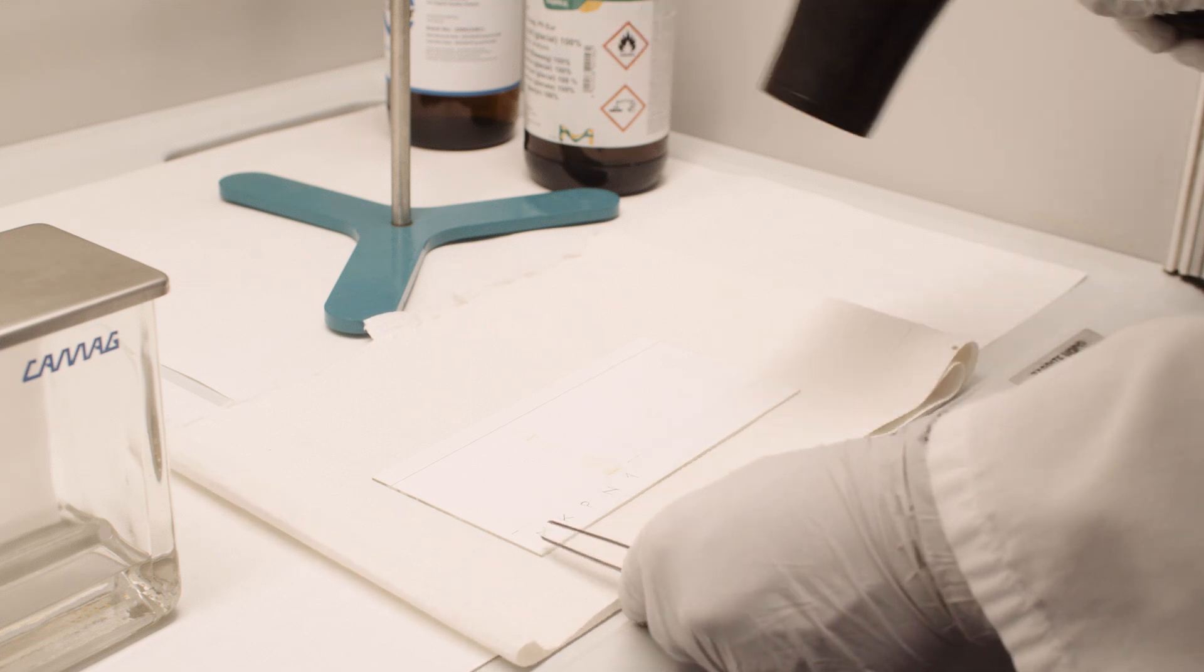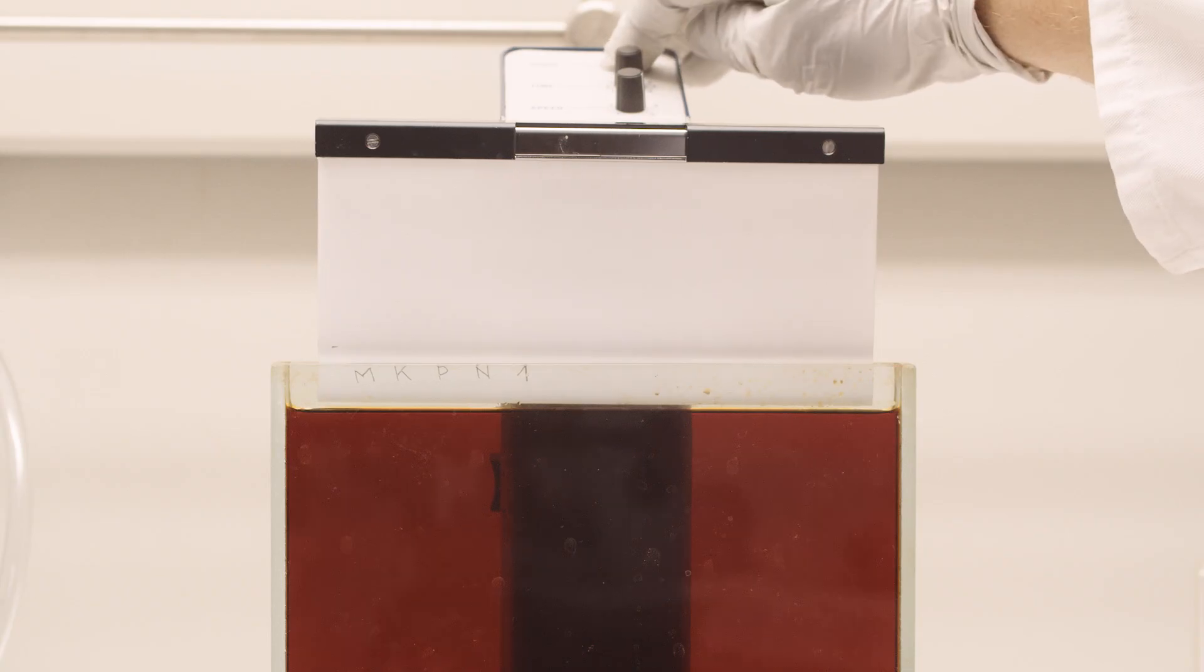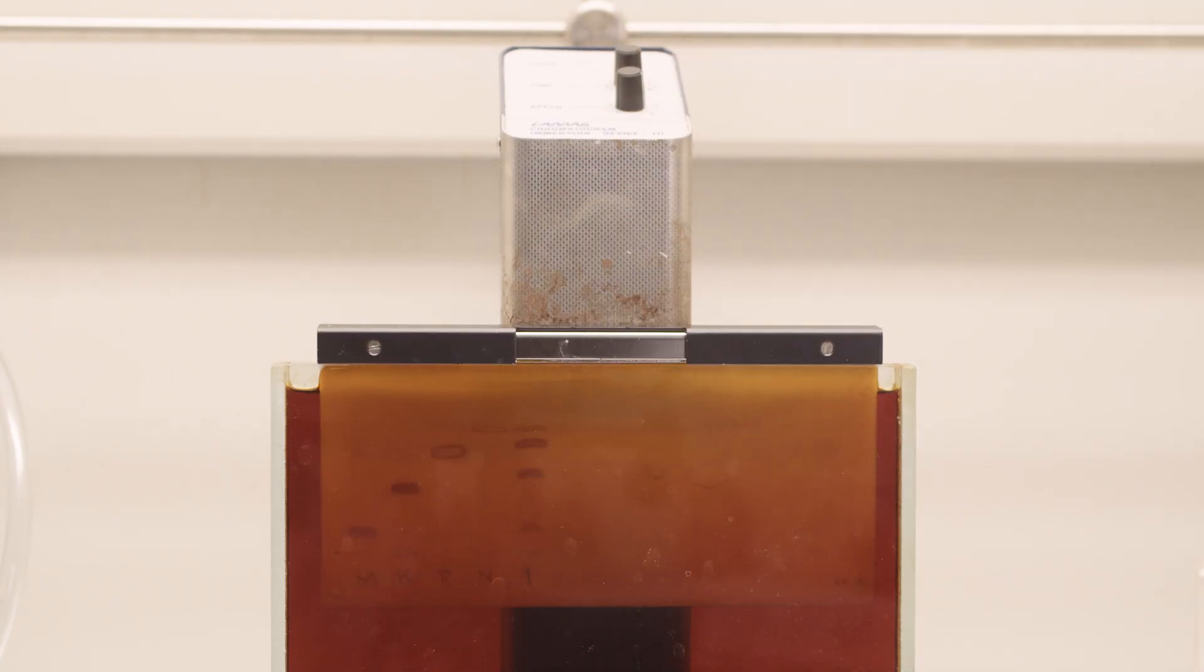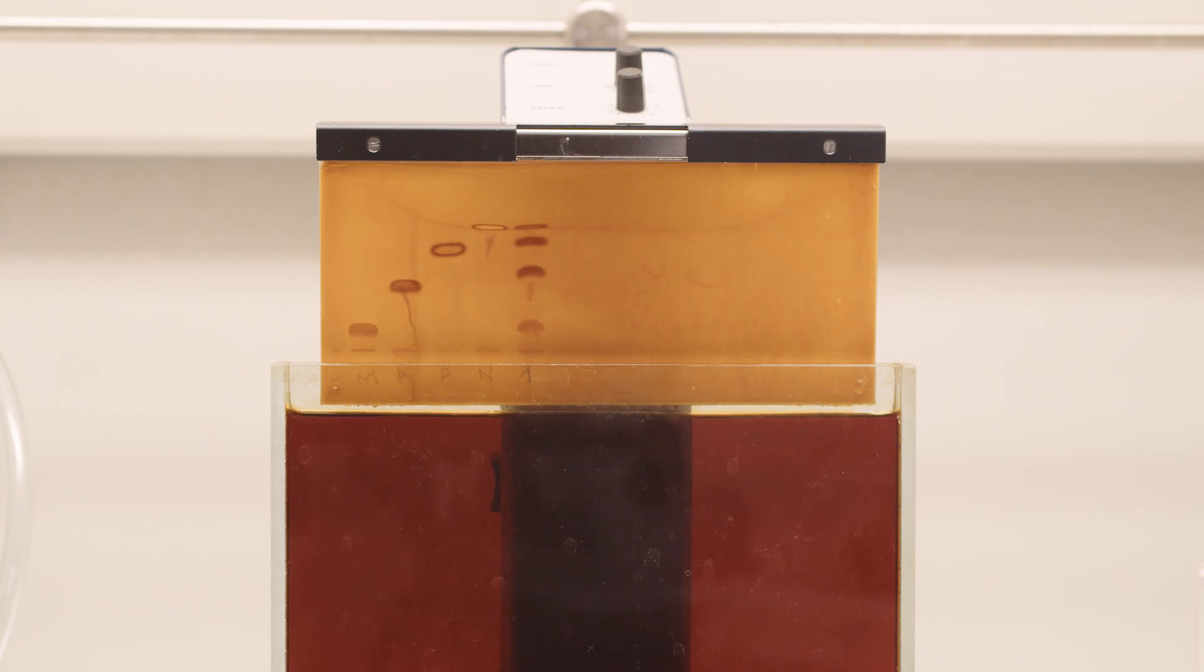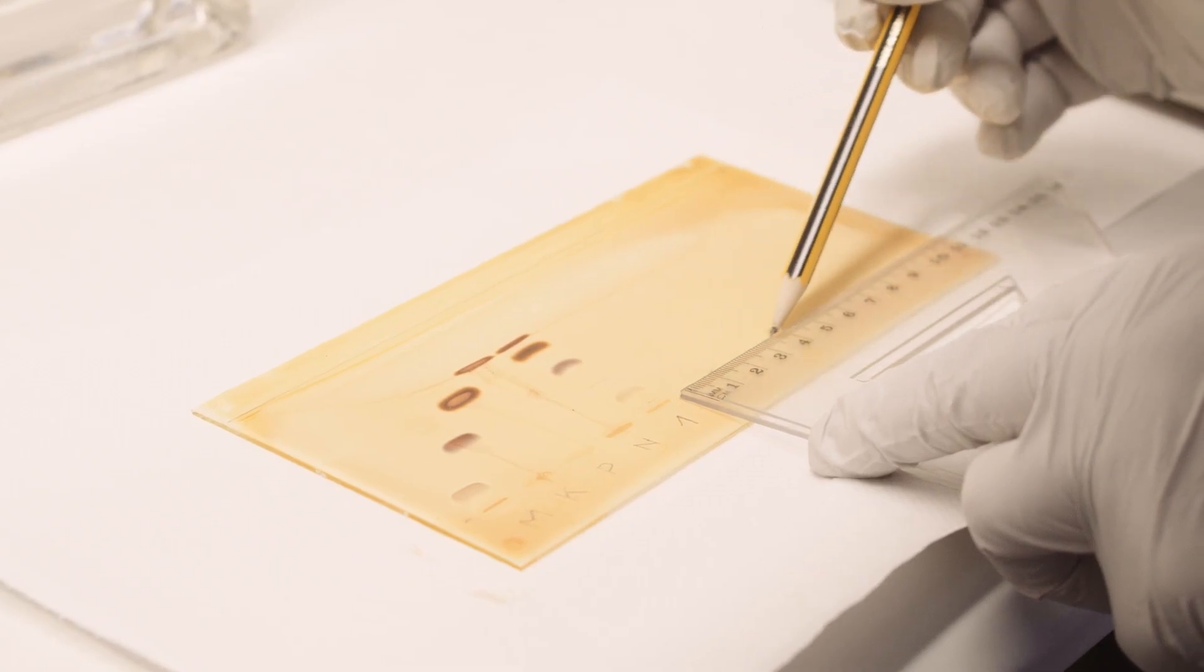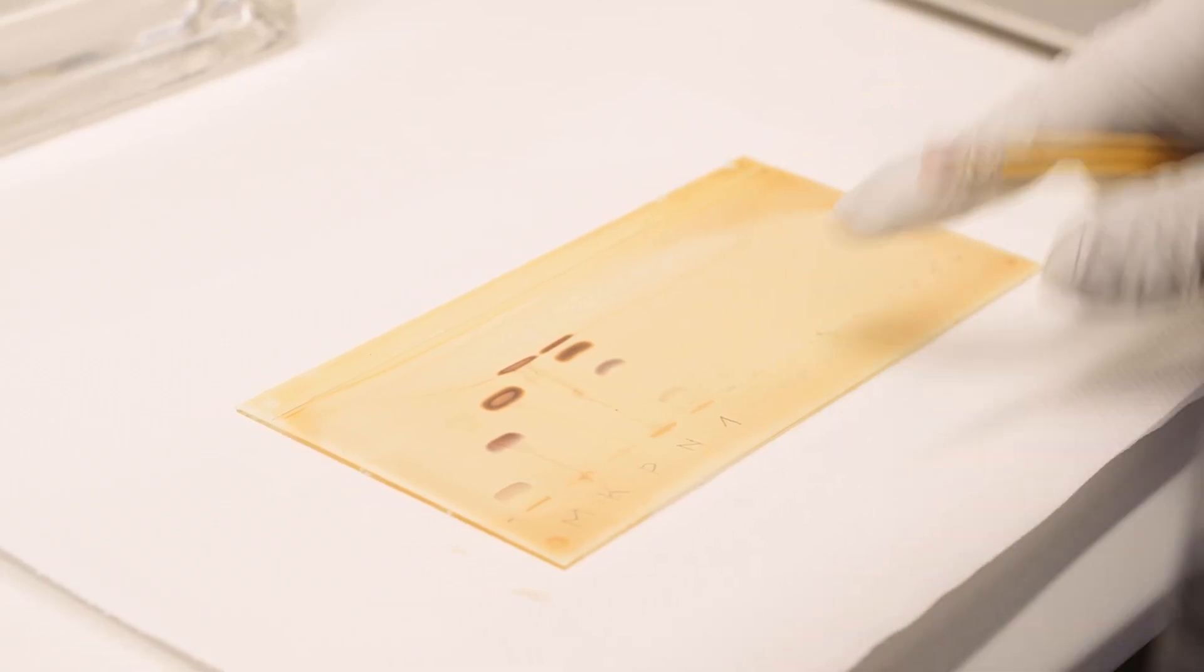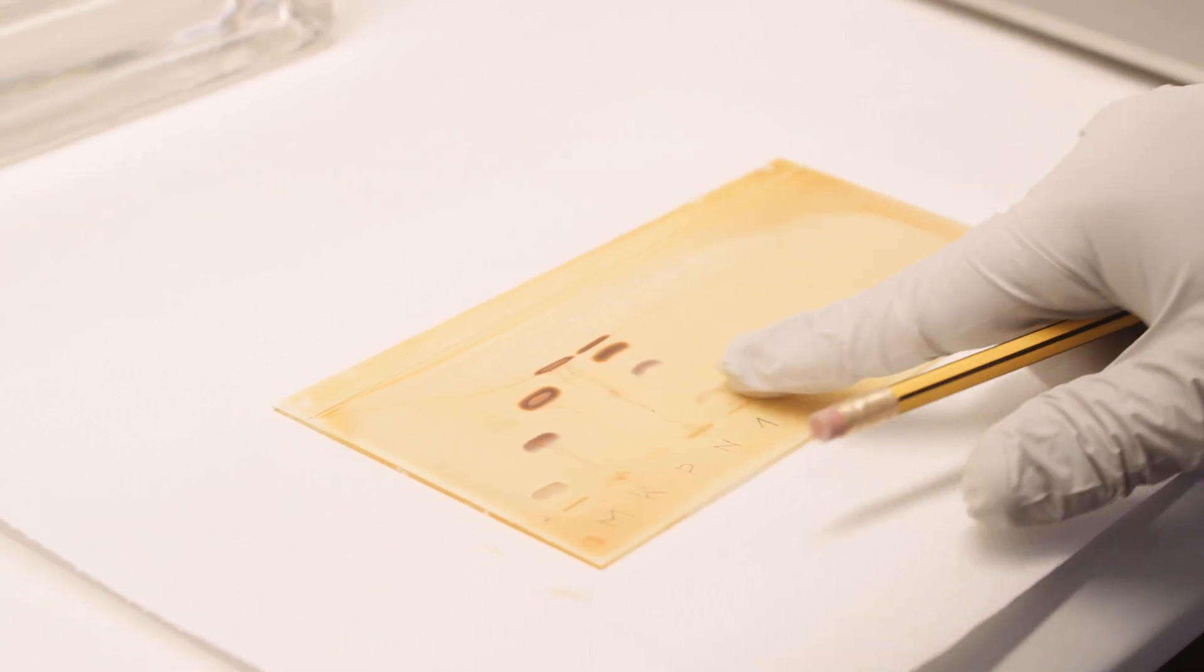Make the alkaloids on the plate visible by immersing the plate in a solution of potassium iodine bismutate called Dragendorff reagent. It colors tertiary amines red. Alkaloids are tertiary amines due to the amine group and will stain. After staining, the tile is dried.